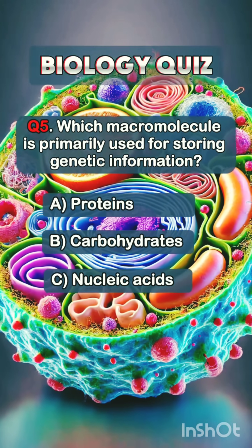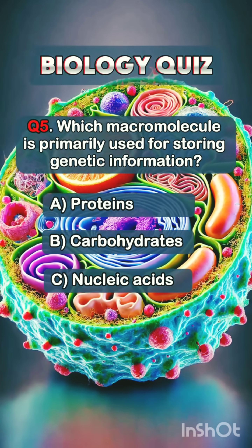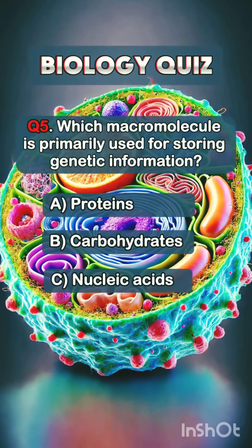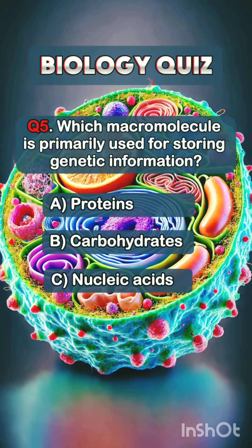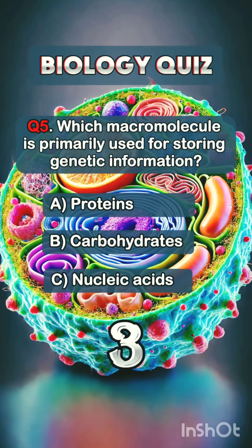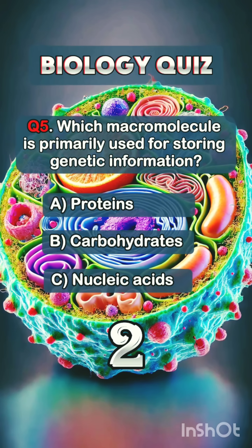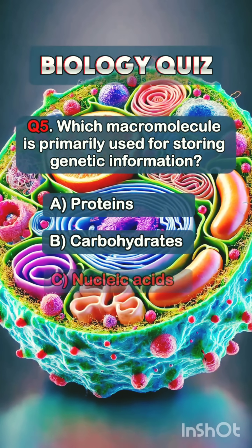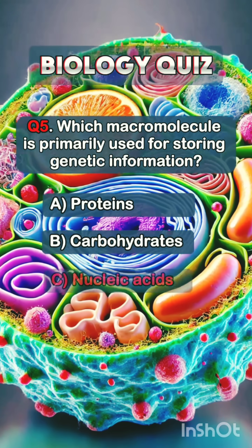Question 5. Which macromolecule is primarily used for storing genetic information? Answer C: nucleic acids.